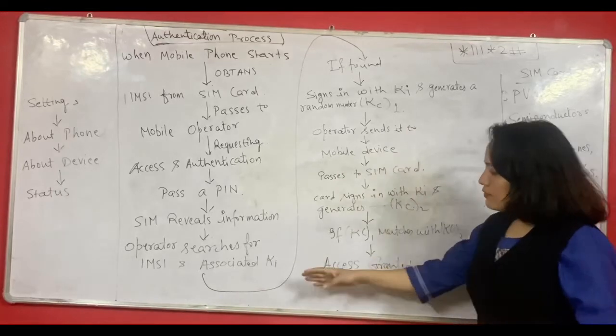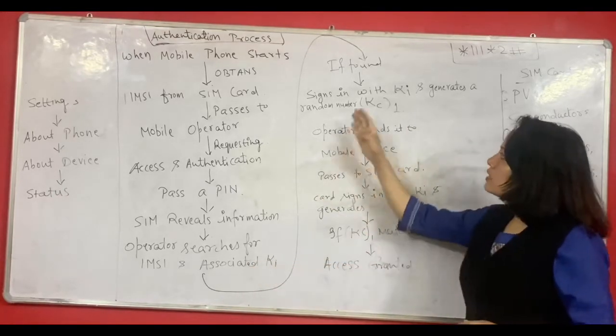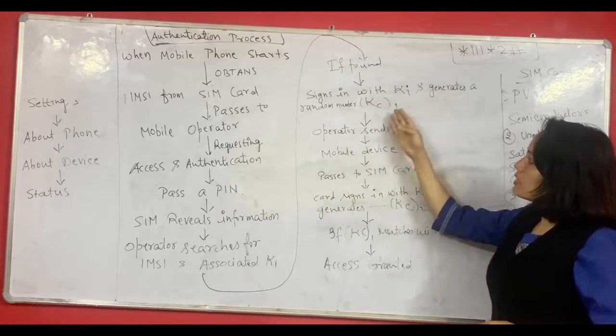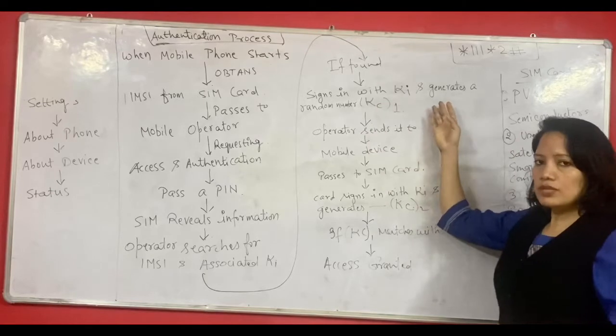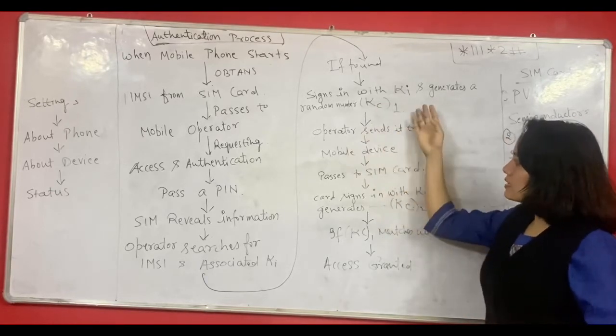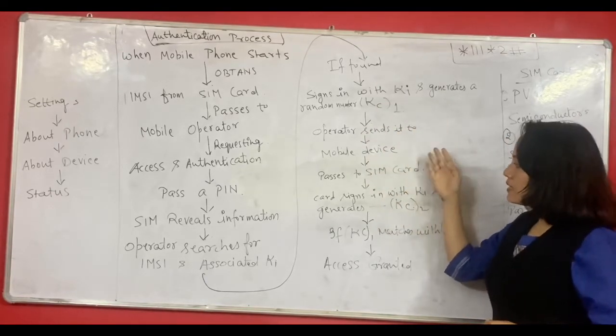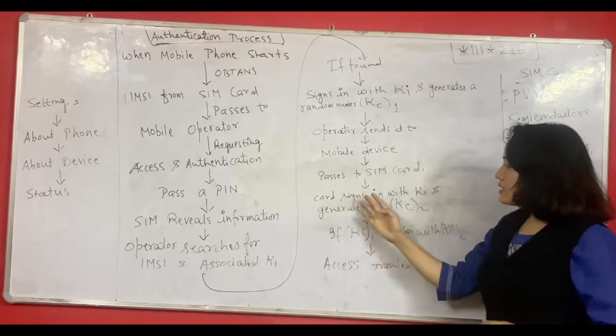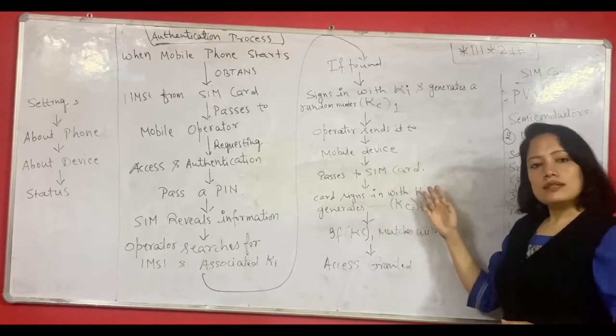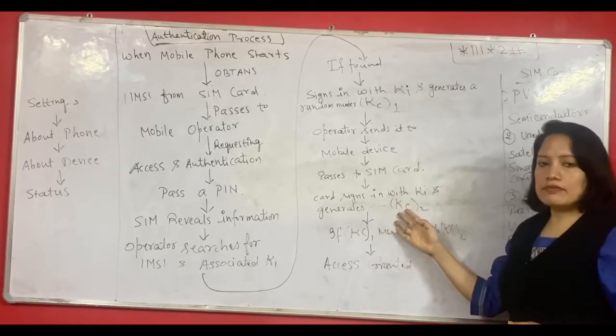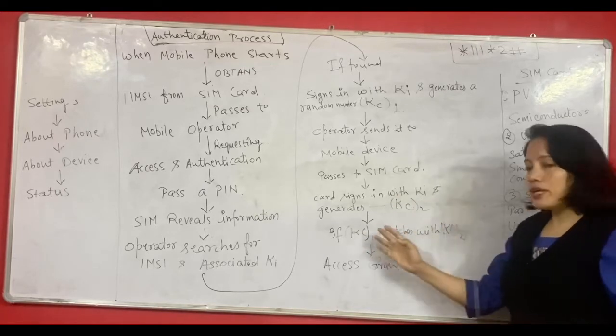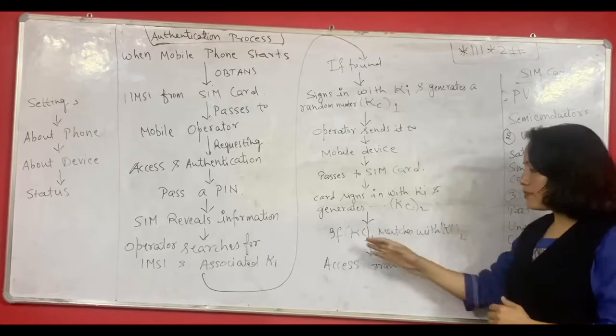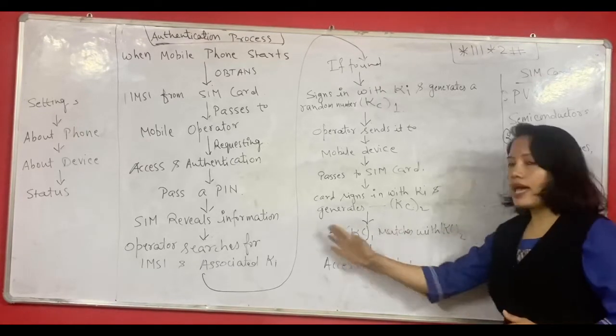So then what happens? If that IMSI and associated key is found, then it signs in with KI and it generates a random number. Say for example KC1. What happens? Then the operator sends the same number to the mobile device. And then that number is passed on to SIM card. Then the card signs in with the authentication key and generates another random number which is KC2. Now if KC1 matches with KC2, after comparison if a match is being found, then the access is granted.